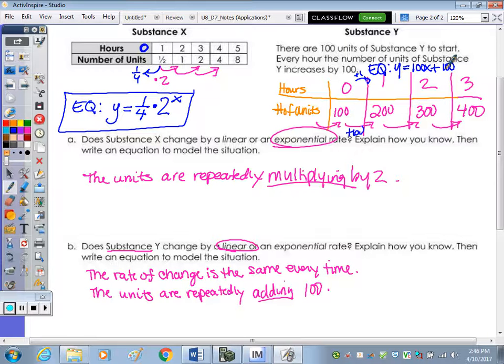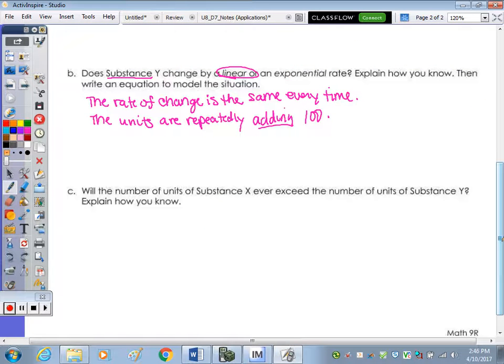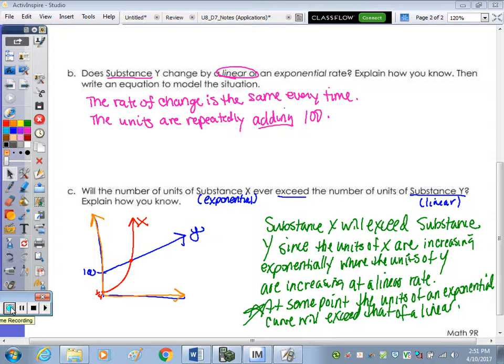Now the last part of the question, and the equations might help you. Will the number of units in substance X, and substance X was the exponential one, will the number of units ever exceed or go beyond the number of units in substance Y, which is linear? Explain how you know.